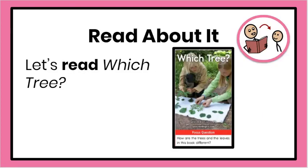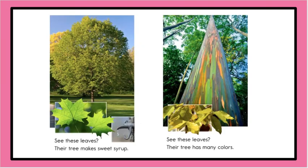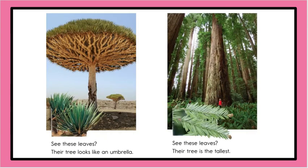Now let's read 'Which Tree.' See these leaves? Their tree can be hollow inside. See these leaves? Their tree has a sharp trunk. See these leaves? Their tree makes sweet syrup. See these leaves? Their tree has many colors. See these leaves? Their tree looks like an umbrella.